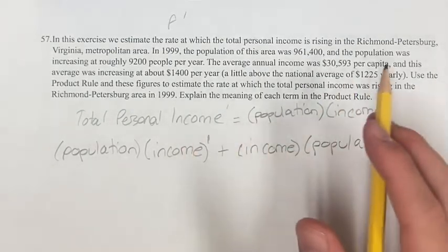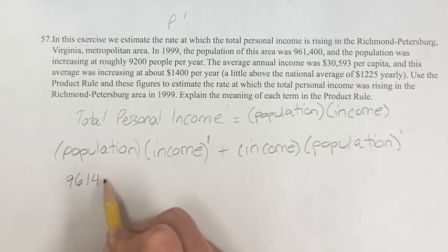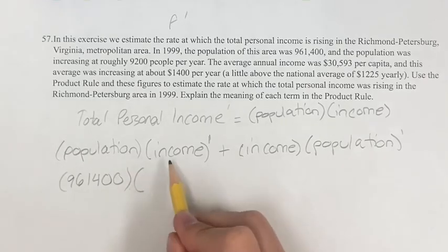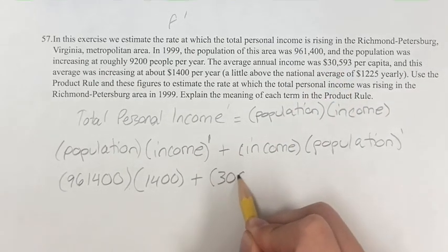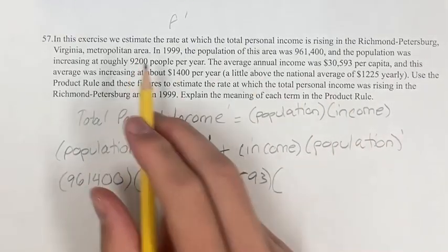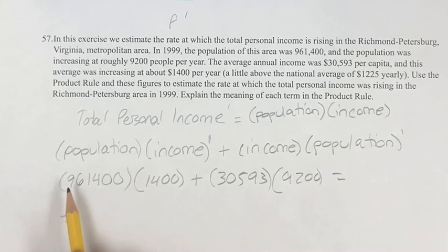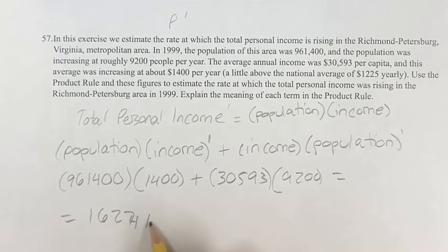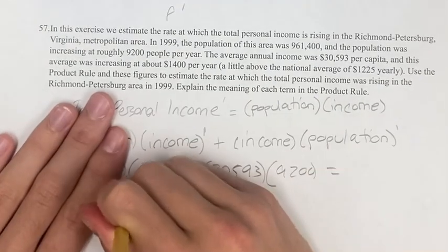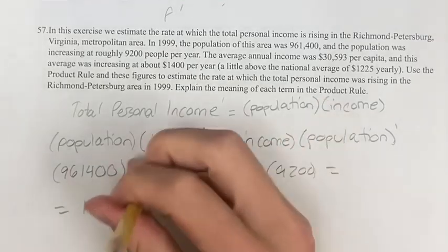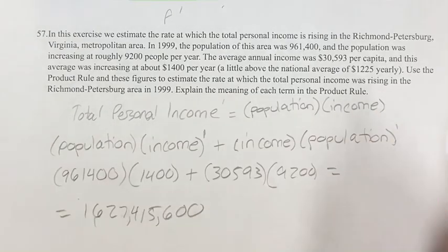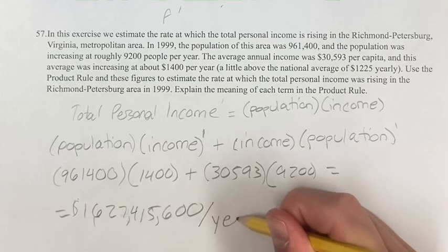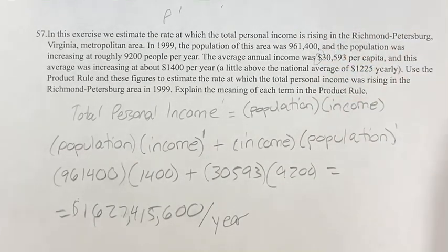In this problem we have all the values given. The population is 961,400 times the rate of change of the income, which is 1,400 per year, plus the average annual income of 30,593 times the rate of change of the population, which is 9,200 people per year. If you plug these values into your calculator, you get 1,627,415,600 dollars per year, because we're dealing with dollars and the rate of change is per year.